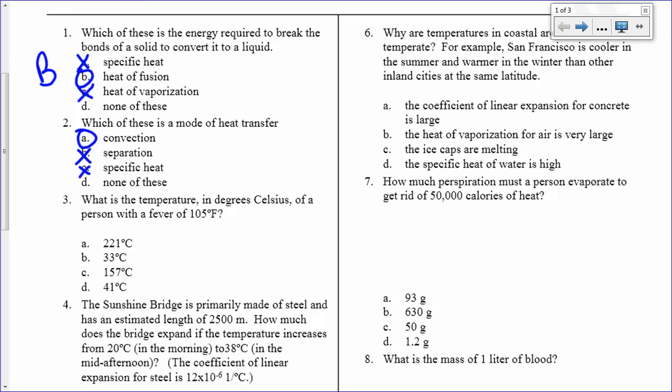What is the temperature in degrees Celsius of a person with a fever of 105 degrees Fahrenheit? You can look on your equation sheet. T degrees Celsius is equal to 5/9 times T in degrees Fahrenheit, which in this case is 105, minus 32. And so that's 5/9 times 73. I get 41 degrees Celsius. So it's D.